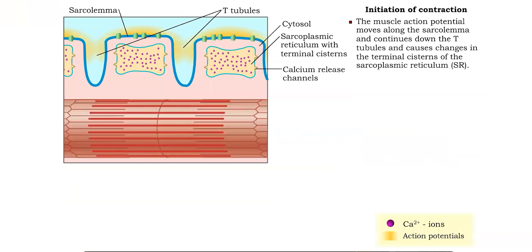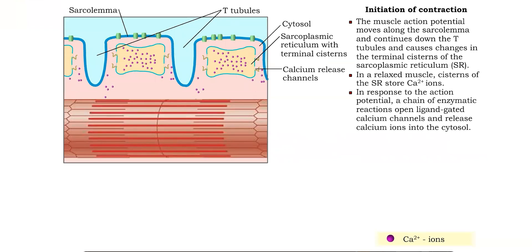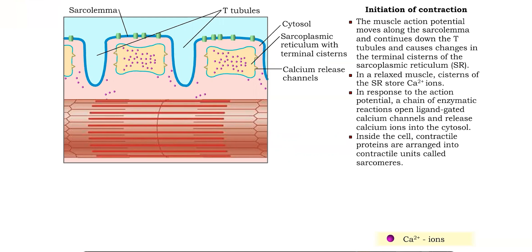The muscle action potential spreads over the sarcolemma and down into the muscle cell. The T-tubules then carry the action potential to the sarcoplasmic reticulum. The cisterns of the sarcoplasm store calcium ions. The action potential triggers a chain of enzymatic reactions that eventually open ligand-gated calcium channels and release calcium ions from the terminal cisterns of the sarcoplasmic reticulum into the cytosol.